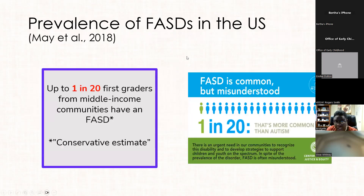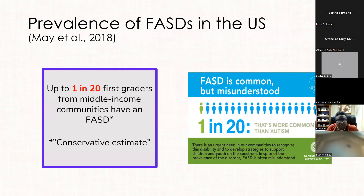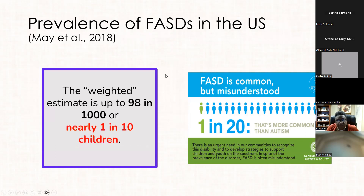The prevalence of FASD in the United States is one in 20, and more likely one in 15, which means every single daycare with more than 20 kids has at least one child with an FASD. The weighted estimate — the more likely number — is one in 10. So if you have 20 kids, two of them are at risk for an FASD. It is extremely common.